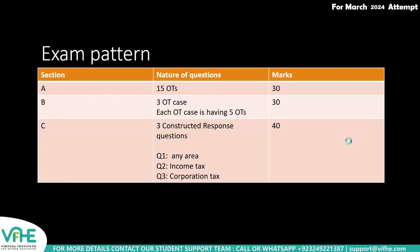Regarding the exam pattern, you should already be familiar with it. Your exam has three sections: Section A, Section B, and Section C. Section A has 15 objective test questions, each carrying two marks. The examiner is only interested in the answer — you don't need to show calculations. So 15 OTs at two marks each means 30 marks can be easily scored if your answers are correct.